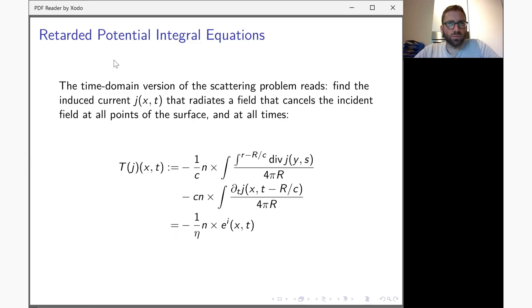One thing that I think is unique to BEAST is the support of retarded potential integral equations. These are time-domain boundary integral equations. The idea is the same, but now everything has to hold for all time. So you're looking for an induced current such that the radiated field cancels exactly an incident field of your choice everywhere on the surface but also at all times. You can see that the retarded time t minus the distance features prominently here in this integral equation.